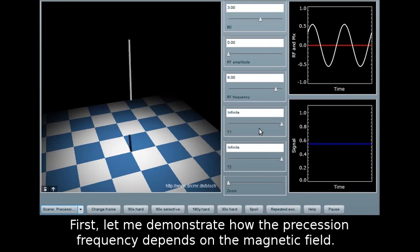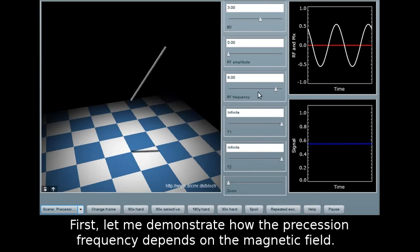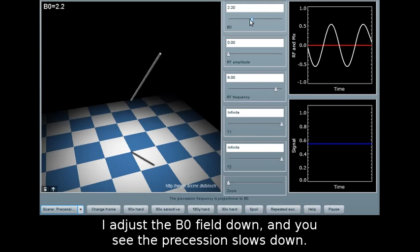First let me demonstrate how the precession frequency depends on the magnetic field. I adjust the B0 field down and you should see that the precession slows down.